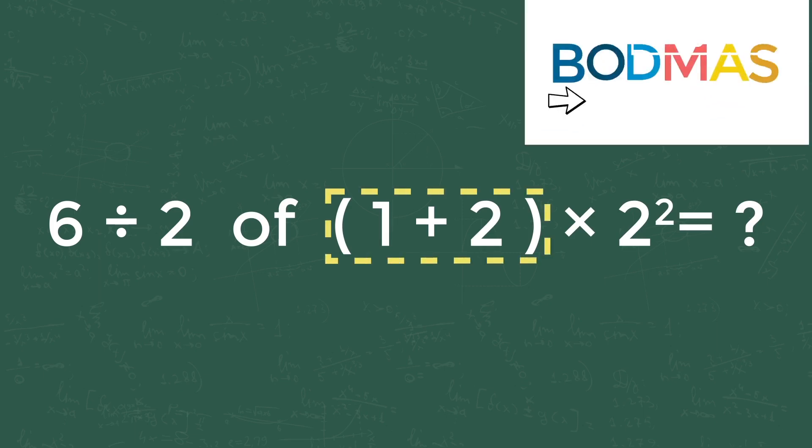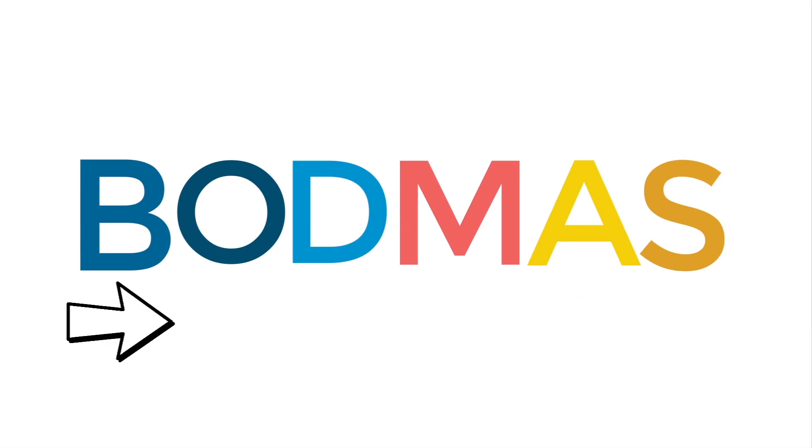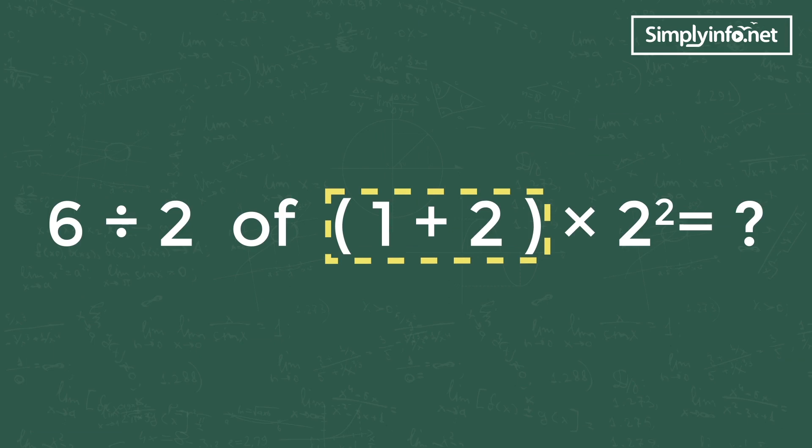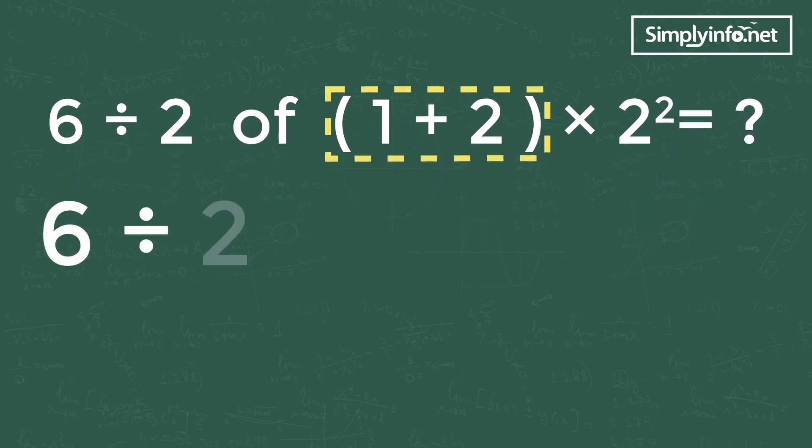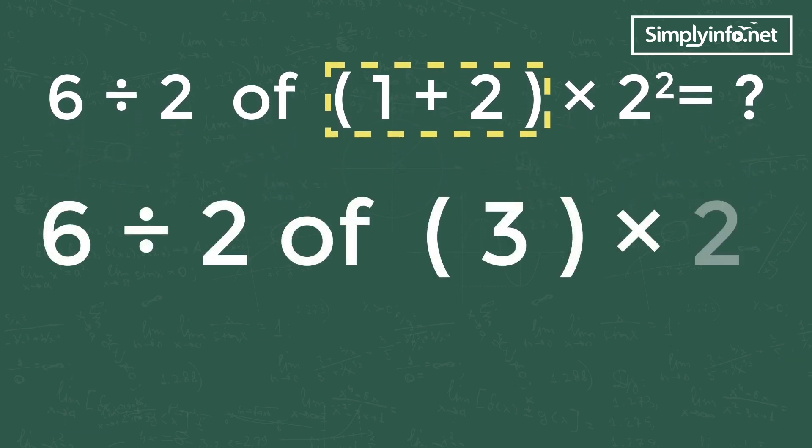So according to BODMAS rule, we are going to simplify the bracket operation first. Then the equation becomes 6 divided by 2 of 3 multiplied by 2². Then we can see one 'of' operation, that is 2 of 3, and one order operation, that is 2².